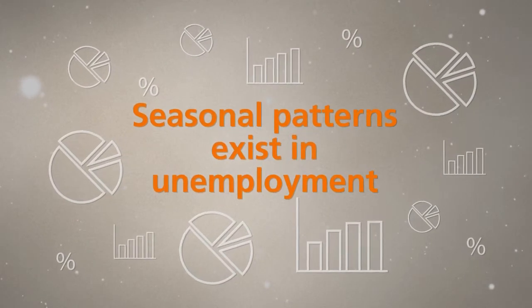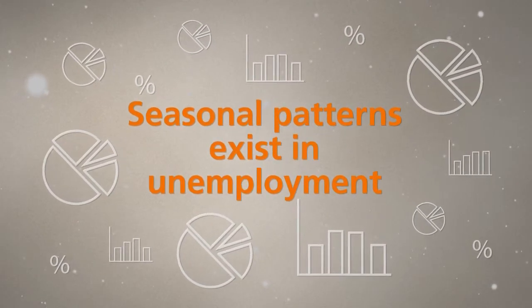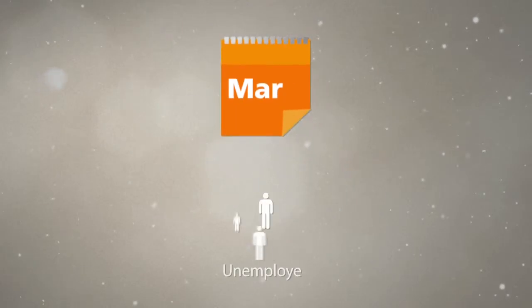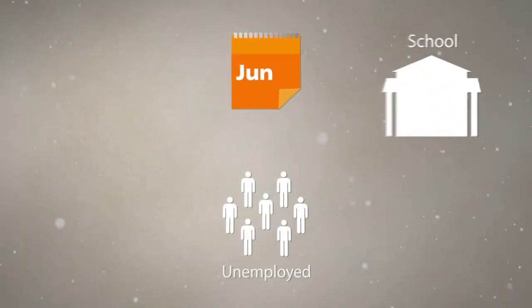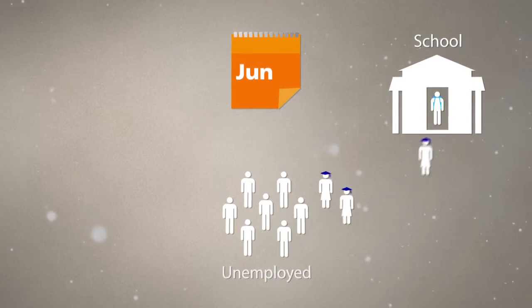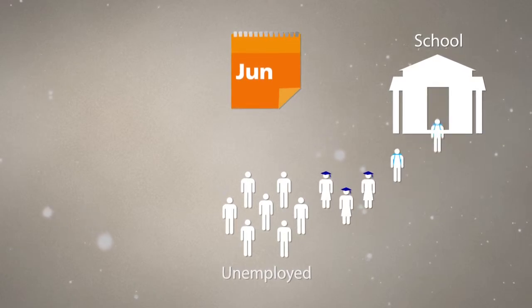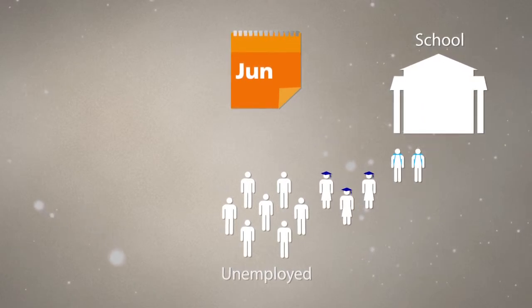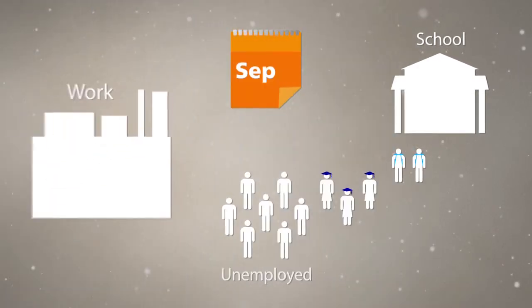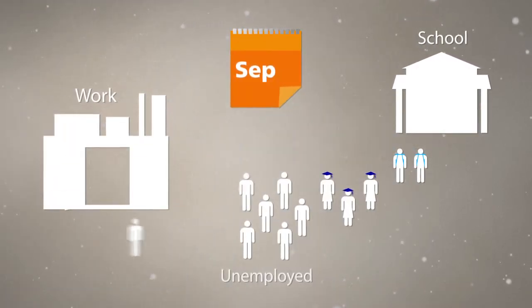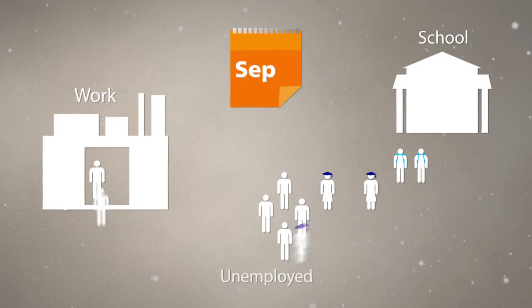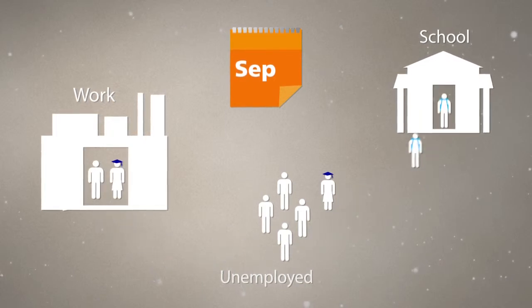Seasonal patterns exist in unemployment. For example, in Singapore, unemployment is usually higher in the middle of the year when graduates enter the labour market and students look for vacation jobs. Later in the year, unemployment will fall as graduates find work and students return to school.